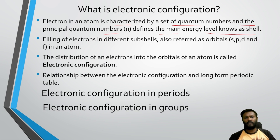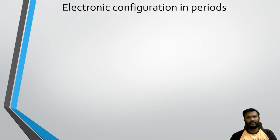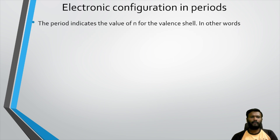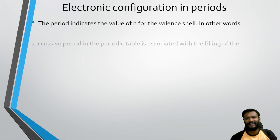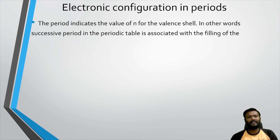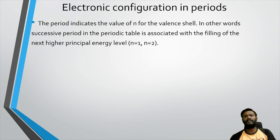Electronic configuration in periods: the period indicates the value of n — n is nothing but the valence shell number. In other words, the successive periods in the periodic table are associated with the filling of the next highest principal energy level.